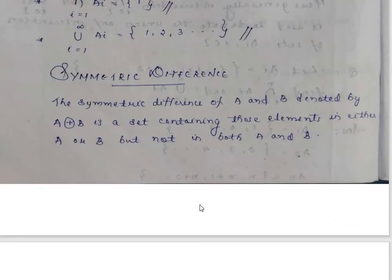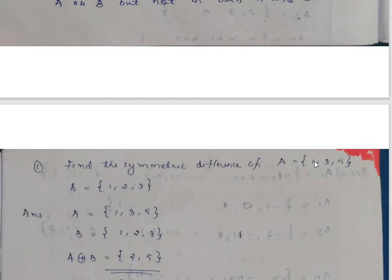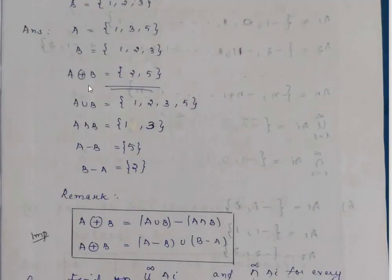Symmetric difference of A and B is the set containing elements in either A or B but not both. Example: A is {1,3,5}, B is {1,2,5}. The common elements (intersection) are {1,5}, so the symmetric difference is {3,2} — that is, {2,3}. Note A symmetric difference B equals B symmetric difference A. Also, A symmetric difference B equals (A union B) minus (A intersection B), which equals (A minus B) union (B minus A).